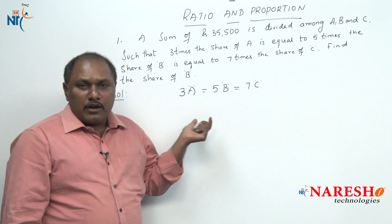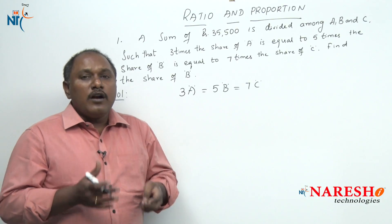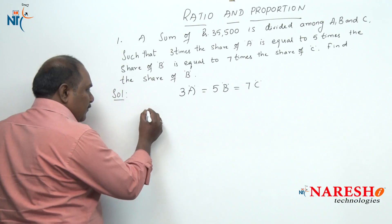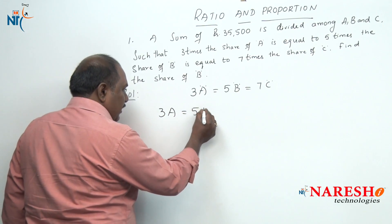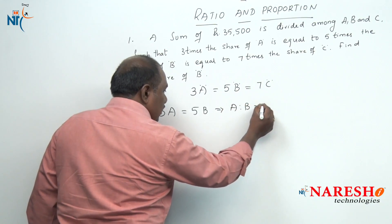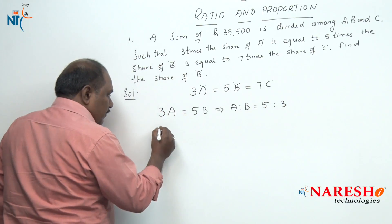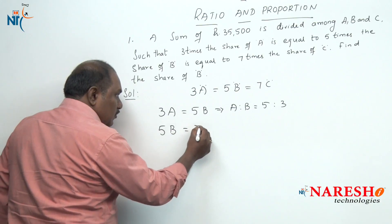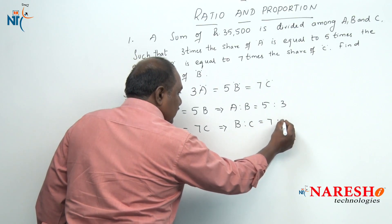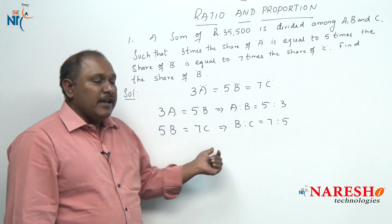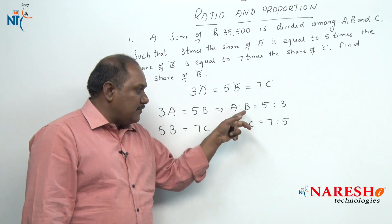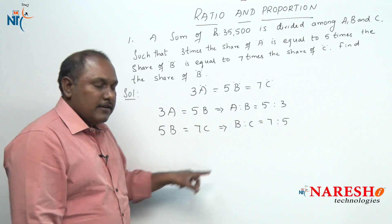First of all, if we need to solve this problem, we need to find out in what ratio the money is divided among A, B and C. For that, the first method: 3A equals 5B implies A is to B. In the previous session, we learned how to find A is to B is to C when we have A is to B and B is to C — that is, when the diagonal elements are equal or are the same.